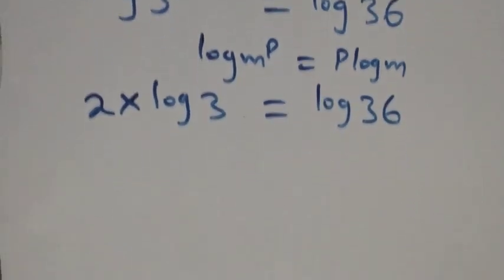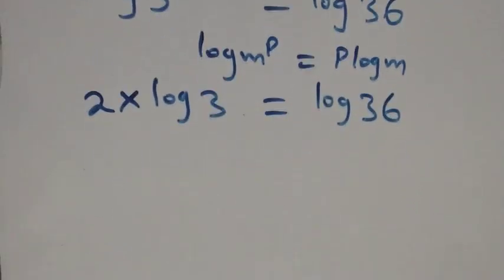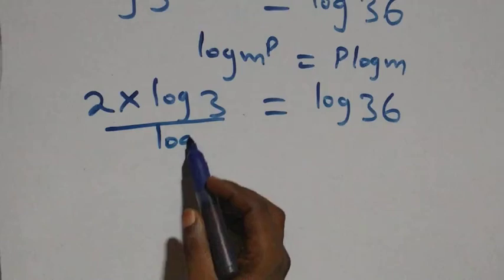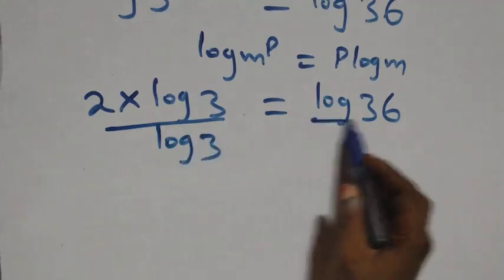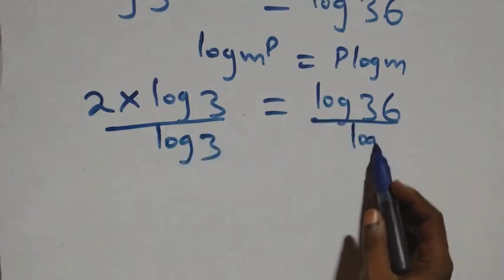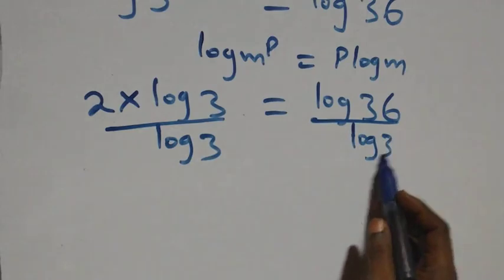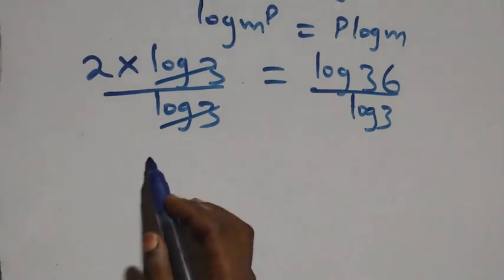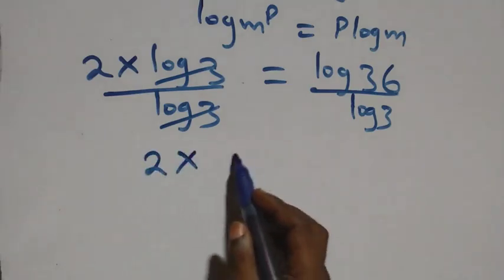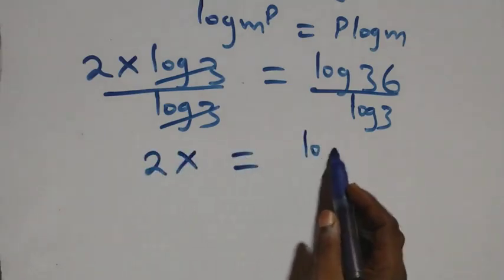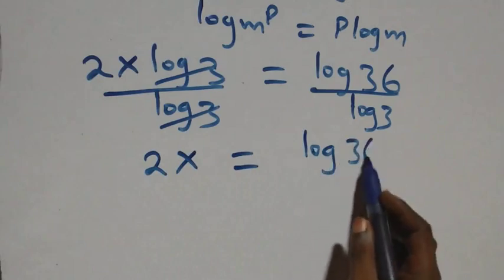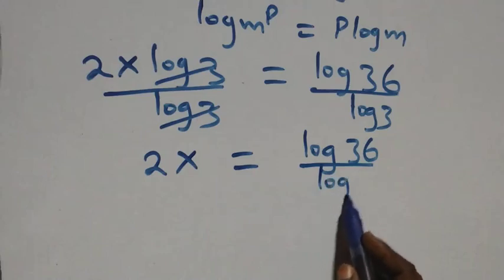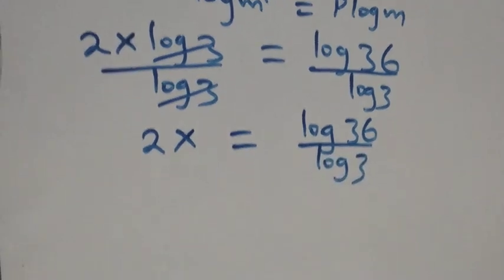The next step: we divide both sides by log 3. Log 3 cancels on the left side, and we have 2x left. So 2x equals log 36 over log 3.